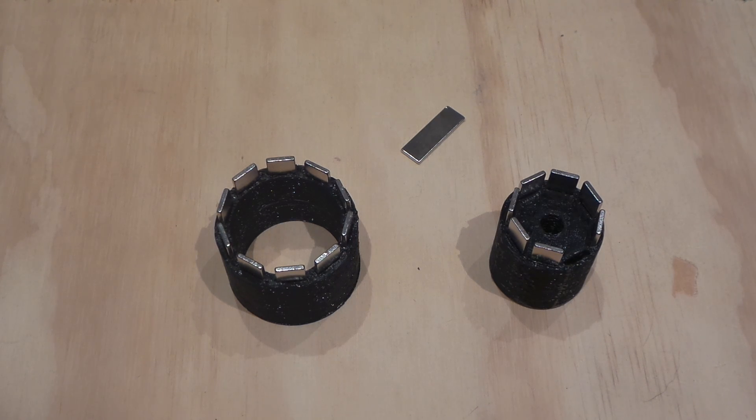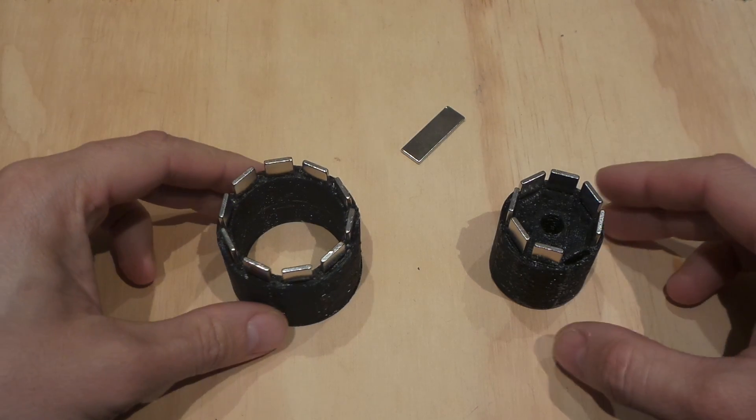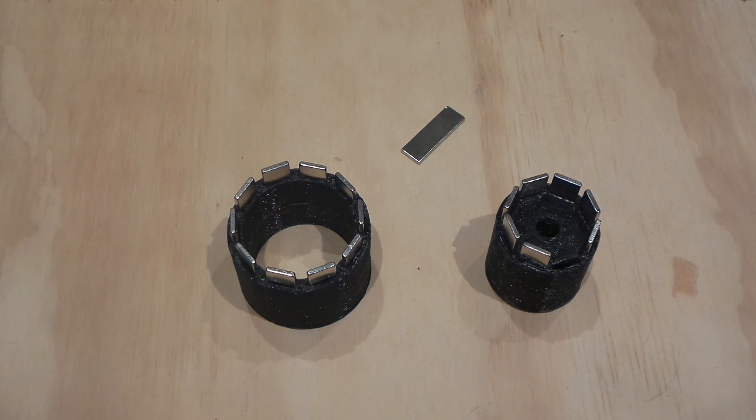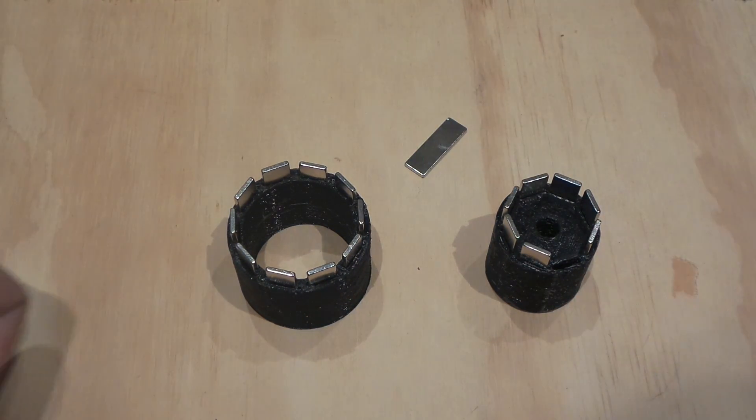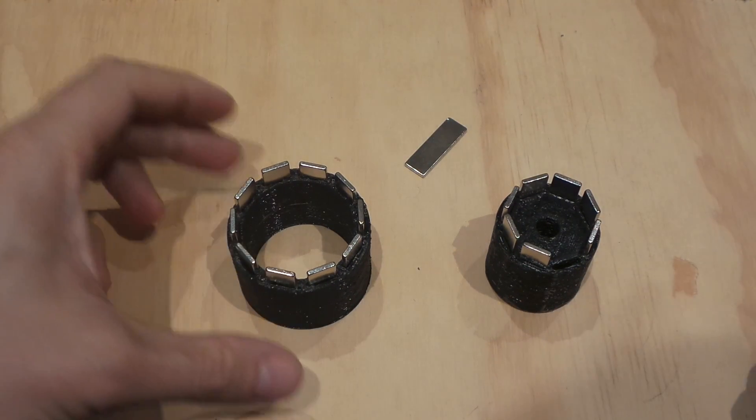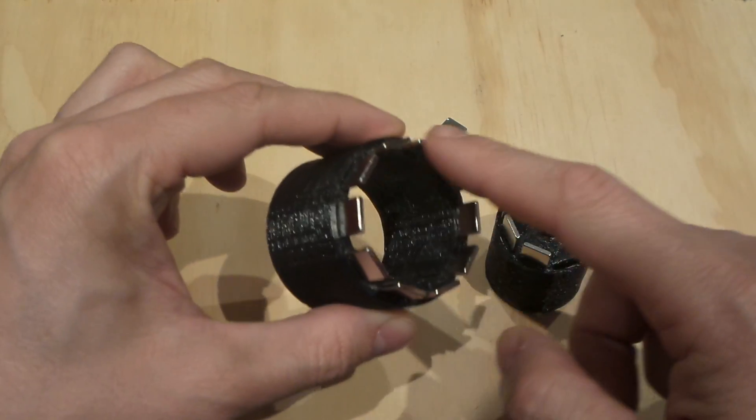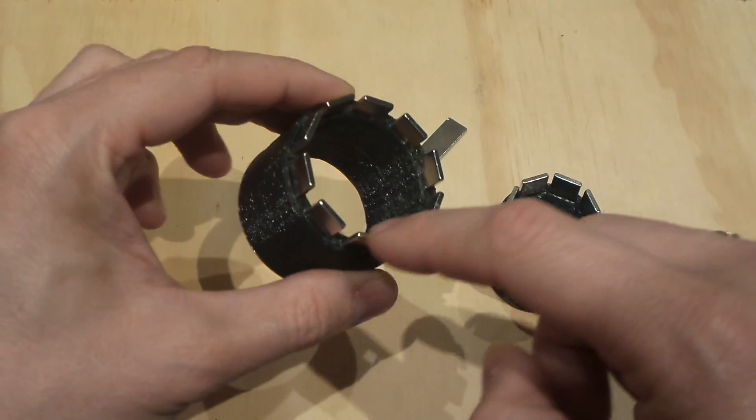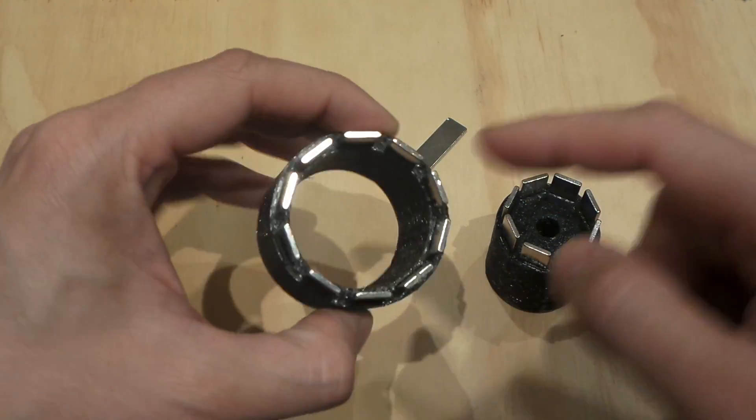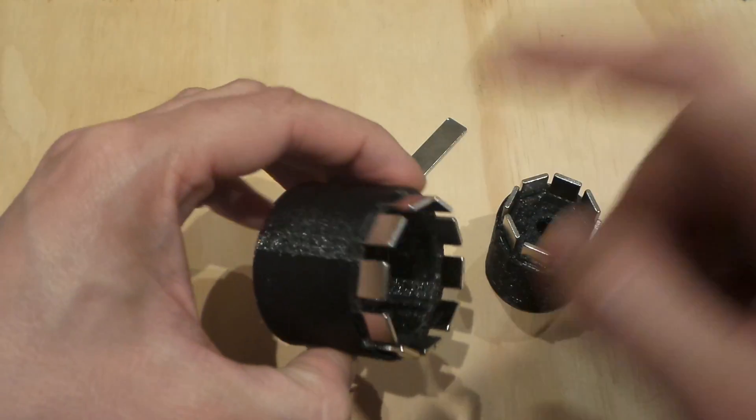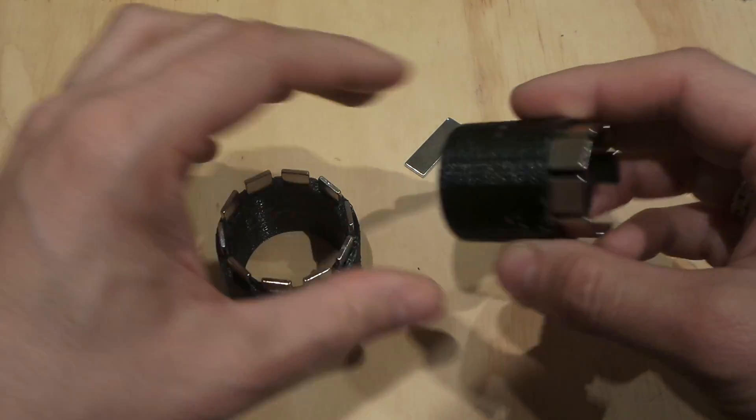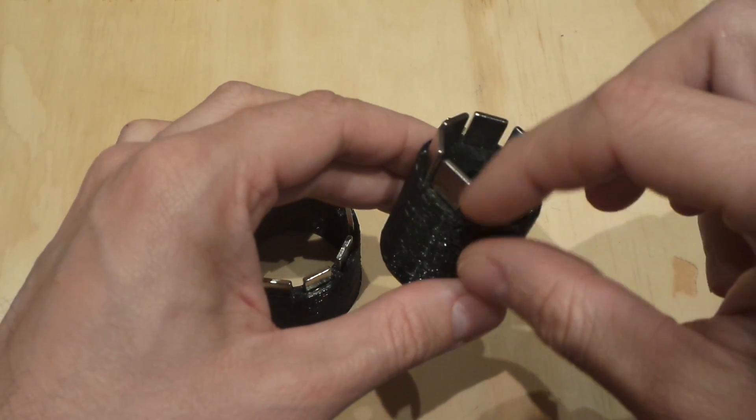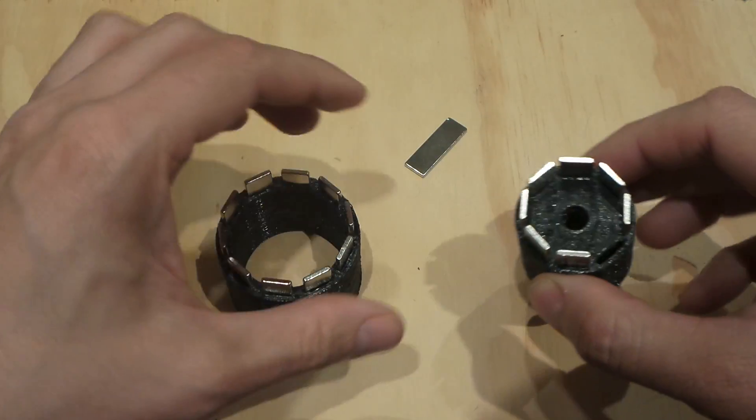This is based on two 3D printed parts housing the flat rare earth magnets. The outer ring has 10 magnets around facing outward the same direction, and the inner drum has eight magnets here organized the same way.